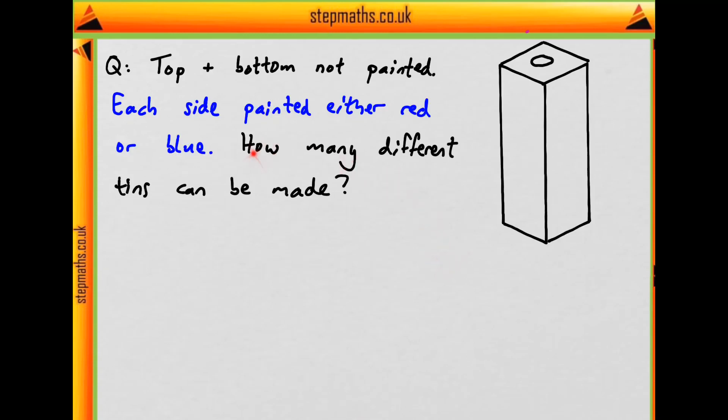Let's try and do this systematically and visualize each of our tins. We could start by having all of the four sides blue like so. I've drawn it so we can see all of our faces to make it a little bit easier to visualize. We're not painting the top or the bottom. So this is one of our tins.